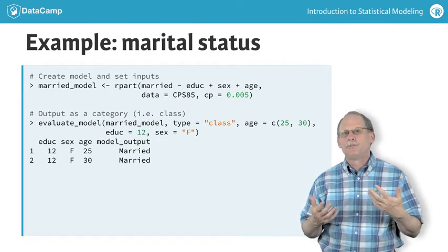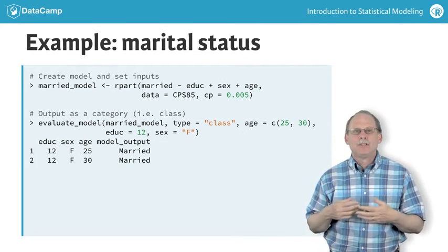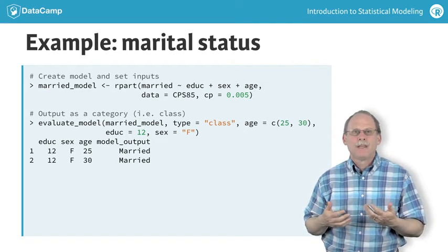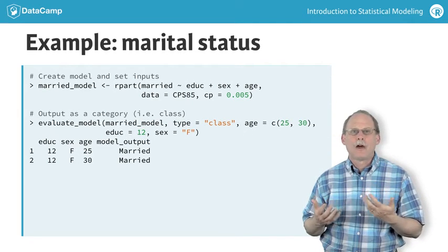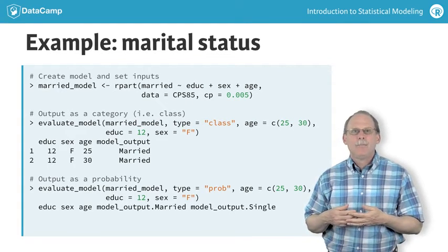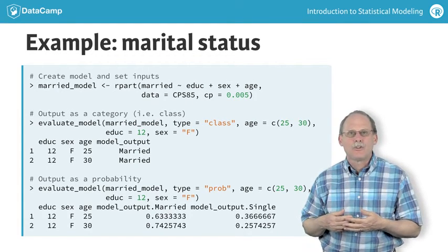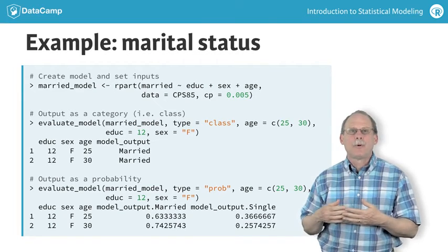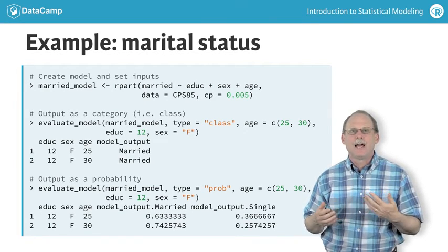But our models are really about groups. For any individual, marriage is all or nothing. But for groups, we can talk about the probability of an individual being married. Many model architectures for categorical outputs do calculate the probability of each possible level of the output.